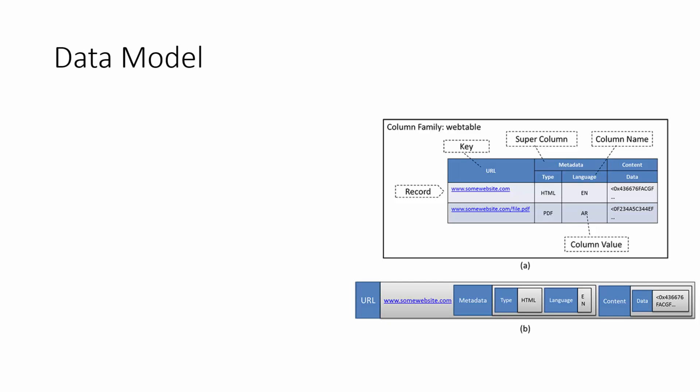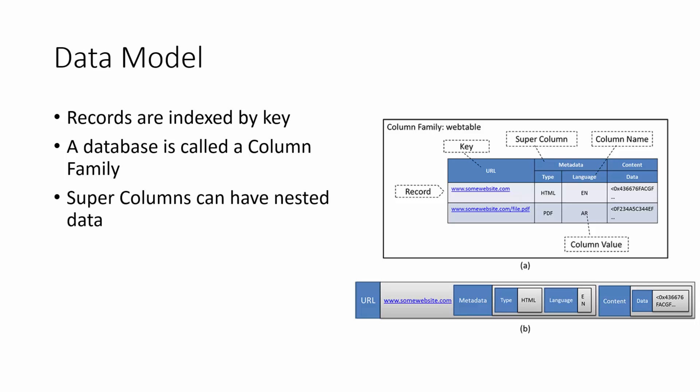First, let's look at the data model in Cassandra. The data model is very similar to what you may have seen with HBase. Each record in Cassandra is indexed by a key. A database in Cassandra is known as a column family, which consists of records that have individual columns with super columns, column names, and column values. The super column can have nested data with multiple sub-columns.